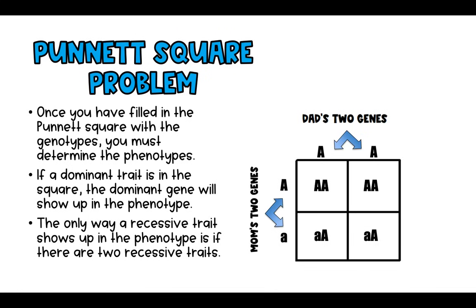In the first square there are two dominant traits, so the dominant phenotype wins out. The same is true in the second square and the third — in the third we do have one recessive gene, but it won't show up in the physical appearance because the dominant one overrides it. That's also true in the fourth square.